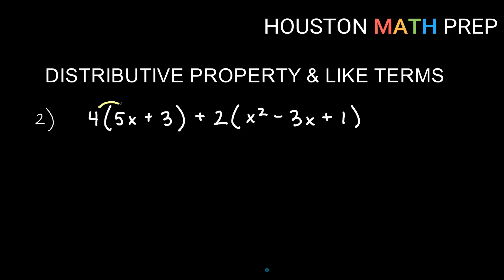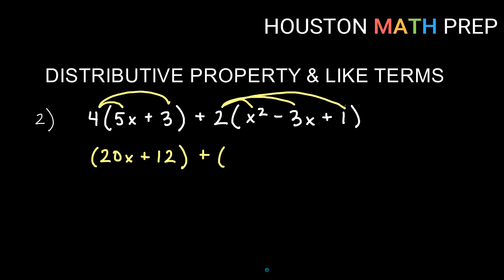For the next example, I'll keep everything in parentheses because when we have a negative out front it's definitely going to matter. Distributing the 4: 4 times 5x gives us 20x, and 4 times 3 gives us 12. Now distributing the 2 into three terms in the second quantity: 2 times x² gives 2x², 2 times negative 3x gives negative 6x, and 2 times positive 1 gives positive 2.